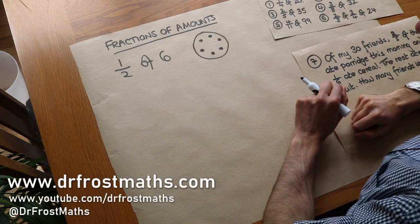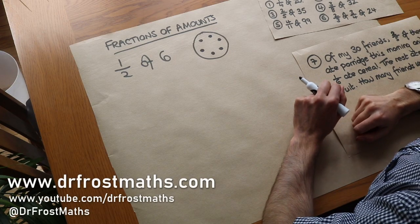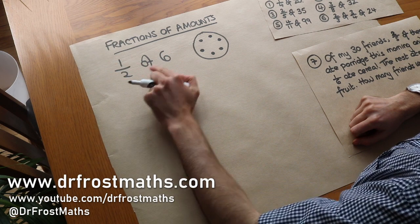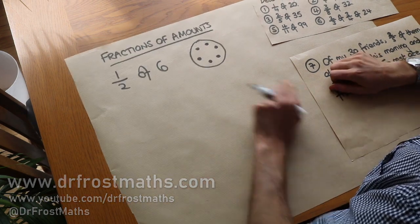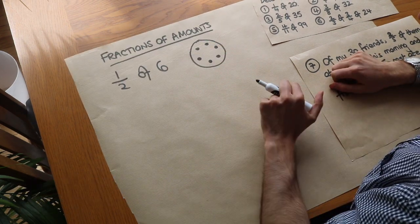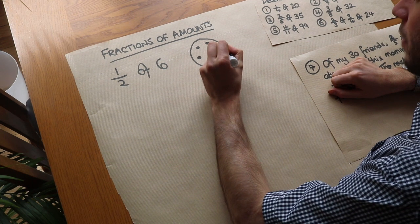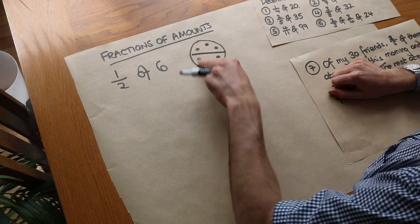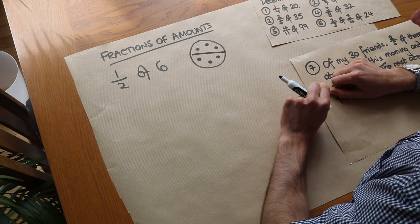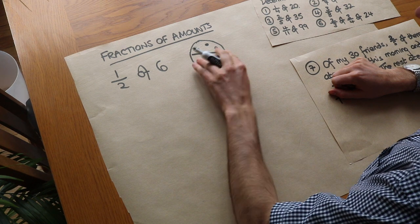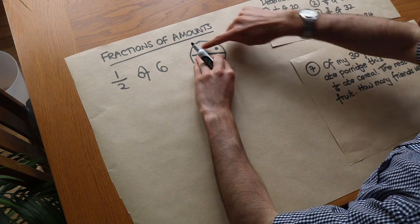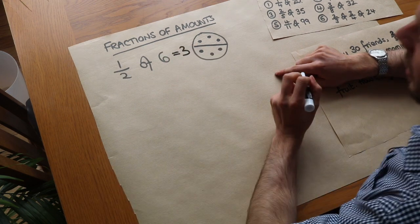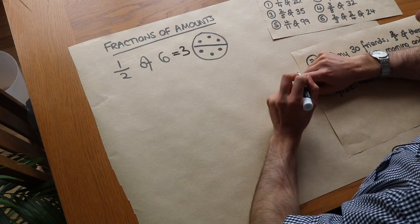Hello and welcome to this video on finding fractions of an amount. Let's say we wanted to find half of six. If we have six things, to find half means to split that into two — we're splitting it into halves. So we would have three things if we had half of six.